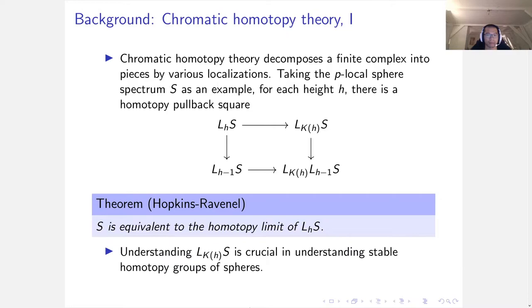As a pullback square, that means understanding the top right corner, which is the K(h)-local sphere, is crucial in understanding stable homotopy groups of spheres.